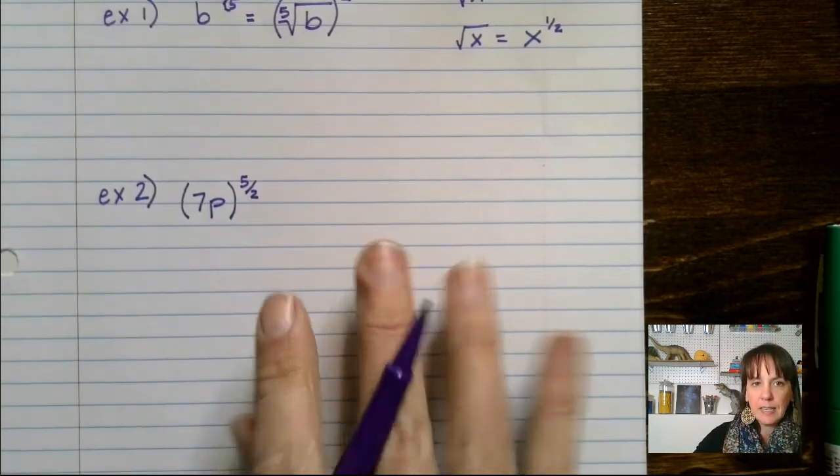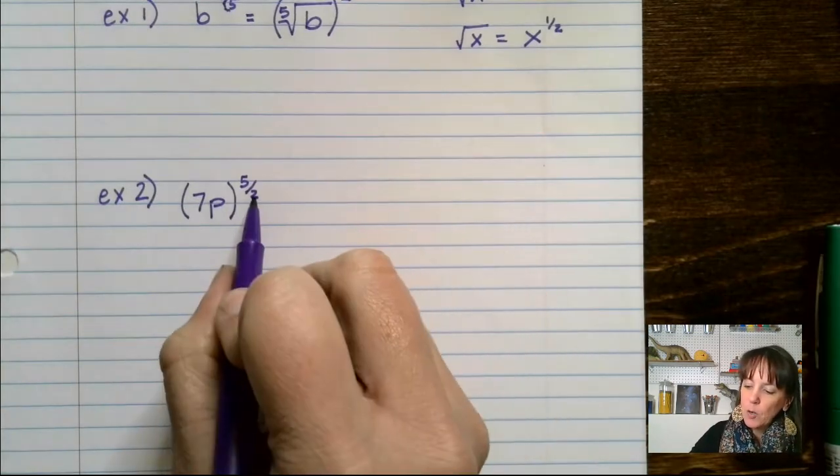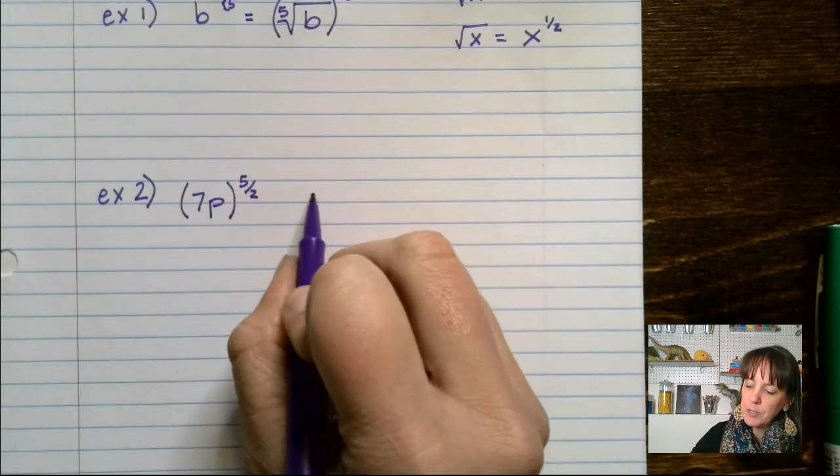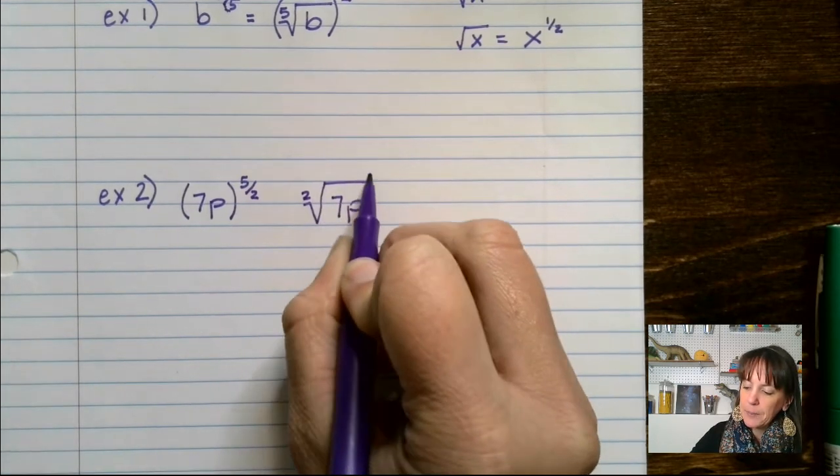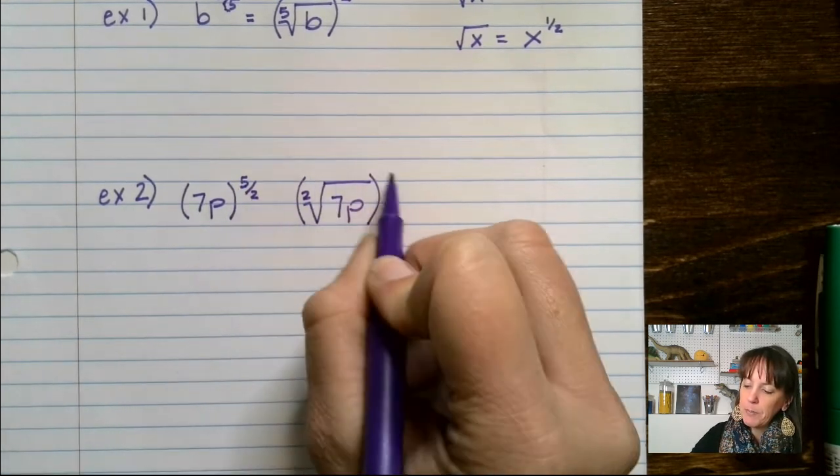Let's talk about our second one that we have down here. We take that 2 and we boot it to the front. So it's going to be the square root of 7p to the 5th power.